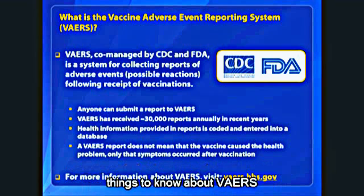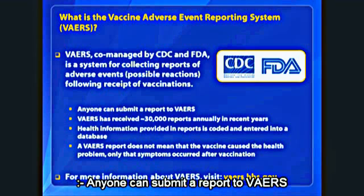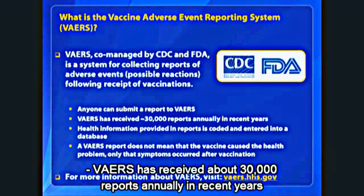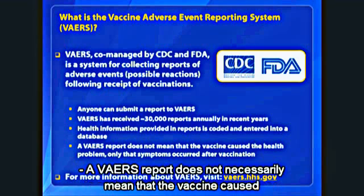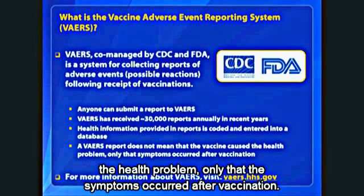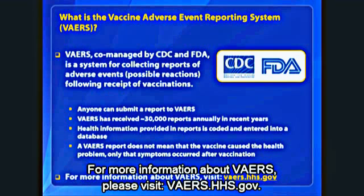Here are some important things to know about VAERS. Anyone can submit a report to VAERS. VAERS has received about 30,000 reports annually in recent years. Health information provided in reports is coded and entered into a database. A VAERS report does not necessarily mean that the vaccine caused the health problem, only that the symptoms occurred after vaccination. For more information about VAERS, please visit VAERS.hhs.gov.